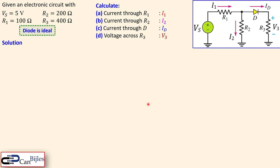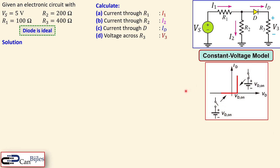Before we move on, let's briefly discuss what the constant voltage model is for a diode. The mathematical expression for the diode's VI relationship is rather complicated, but for most cases you can use a very simple model. This constant voltage model will do the job for most cases.